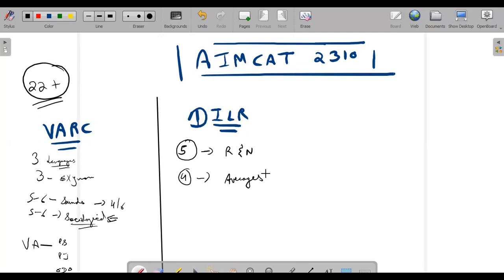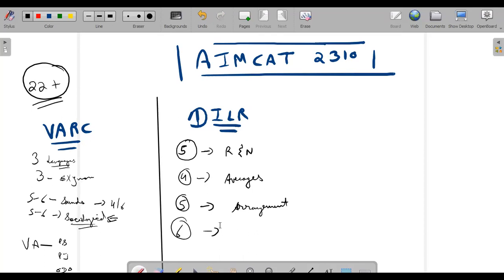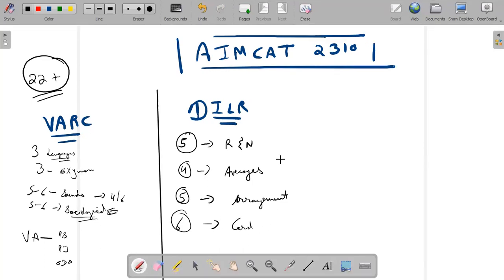Then there was a five question set that was again pretty easy - an eight digit phone numbers arrangement set. So five, five - that's 14. Then there was a six question set related to some card game.